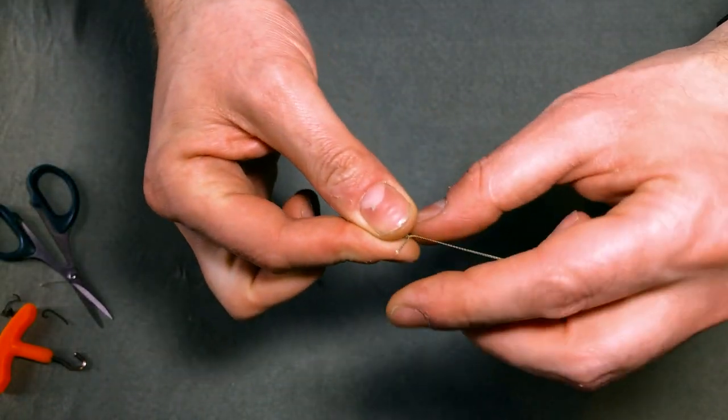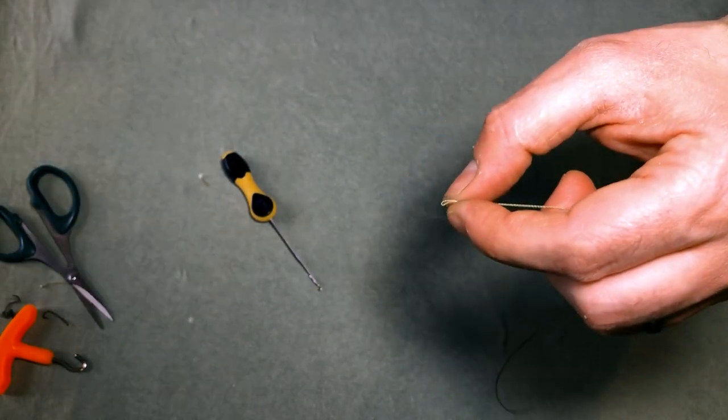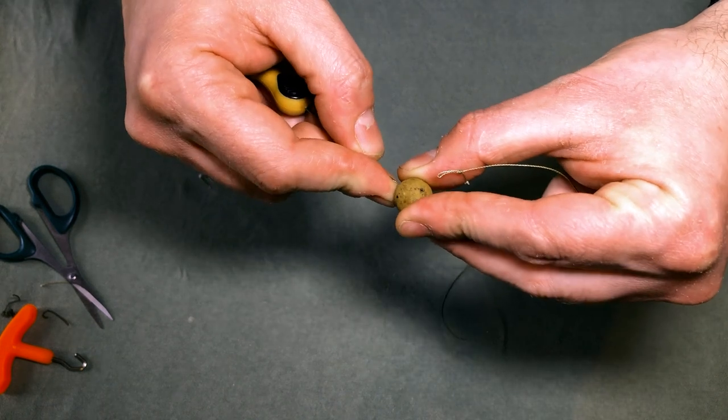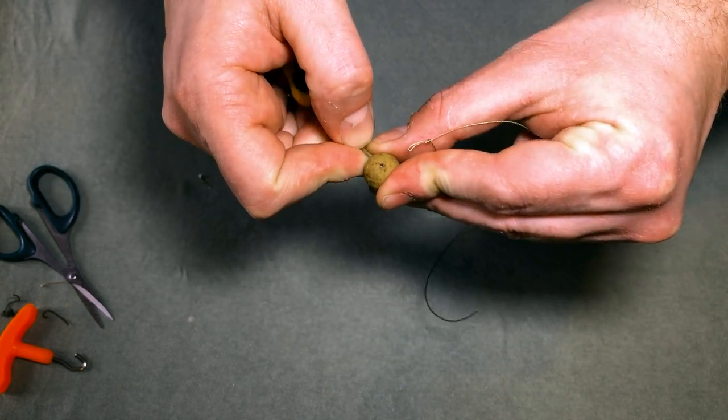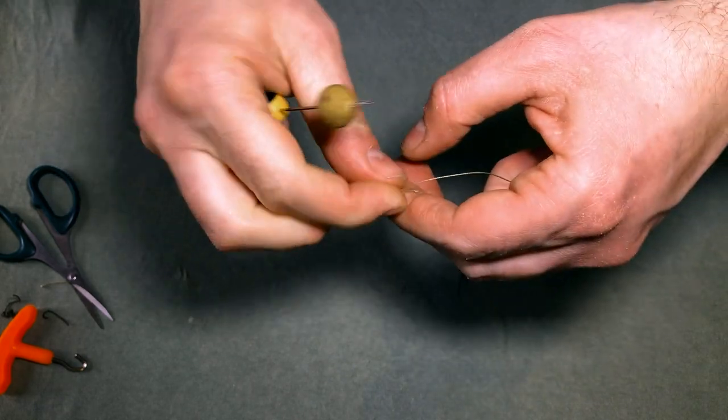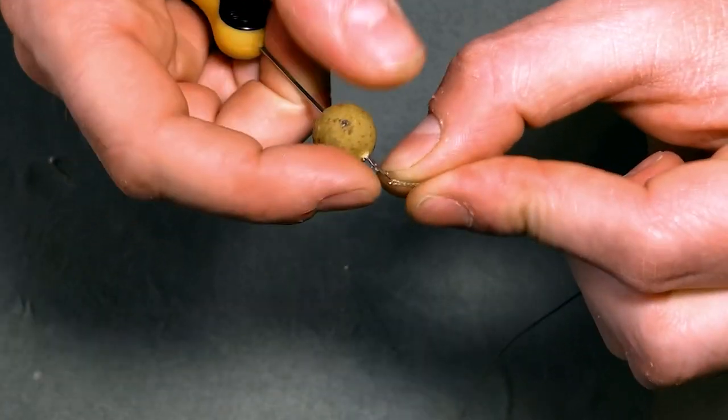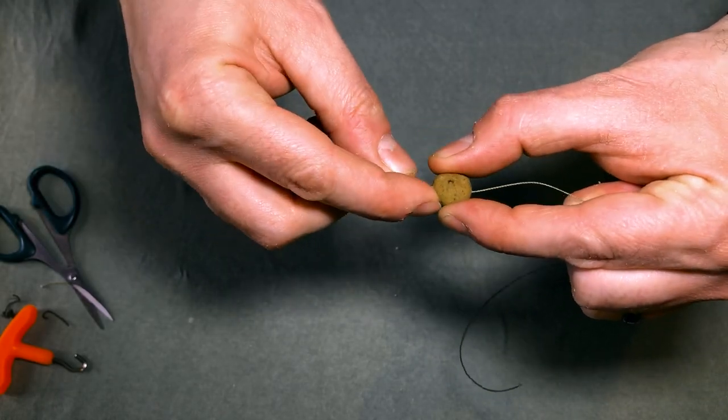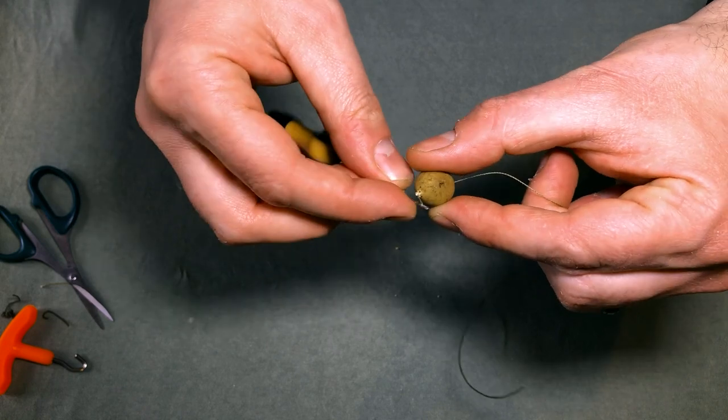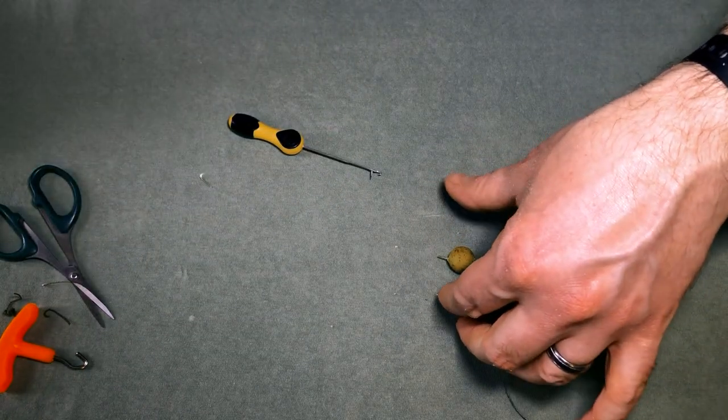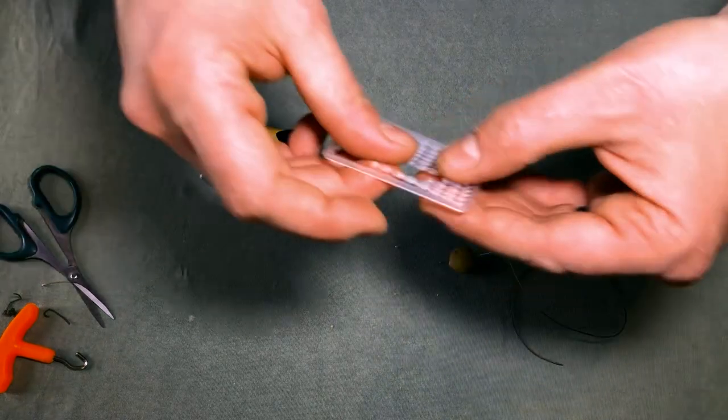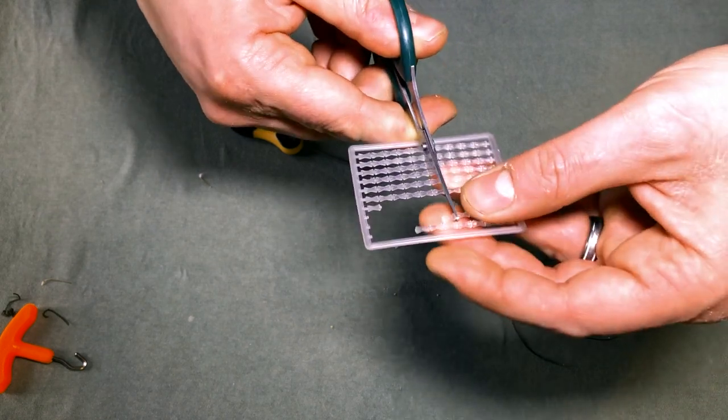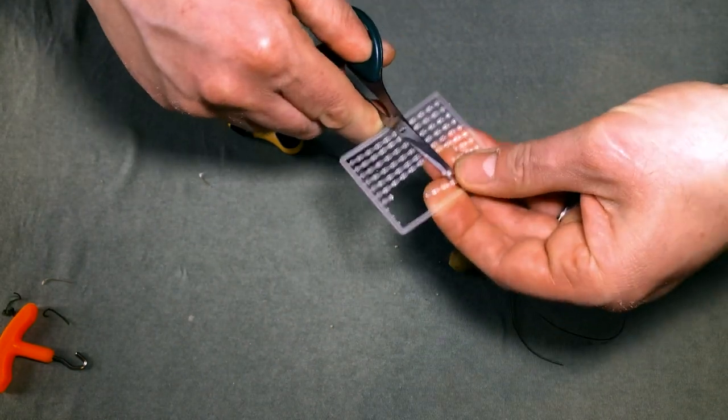So the next stage is actually to thread your hook bait on. Now this helps you work out how long the hair is going to be. So here I'm using a 15mm boilie. And just by threading that on that gives you a good guide on how long the hair needs to be. And once you've got your boilie threaded on there it's just a simple case of taking one of your boilie stops and threading it through the little loop that you've created to secure your hook bait.